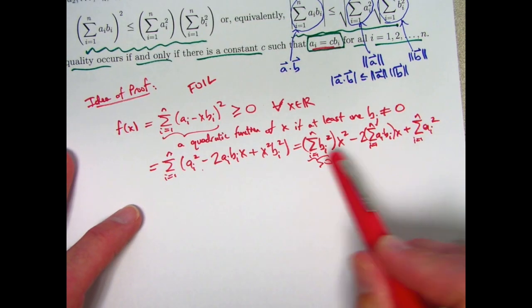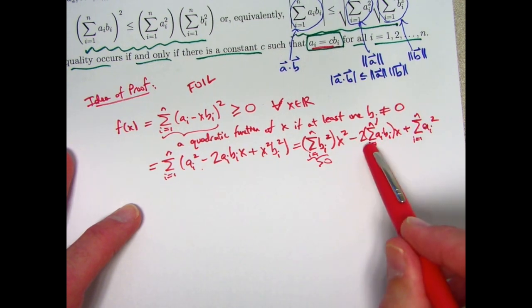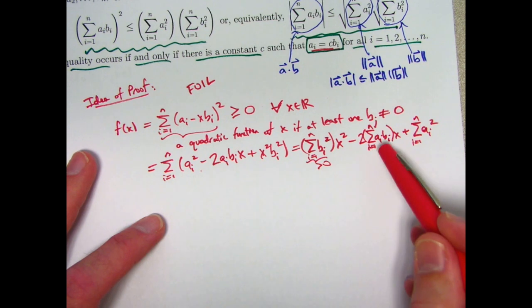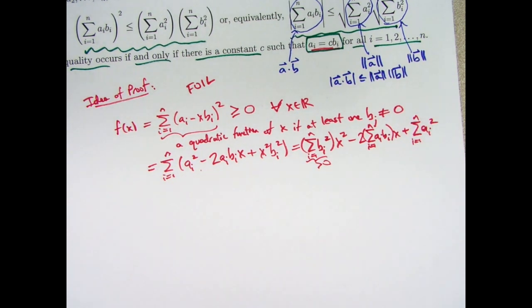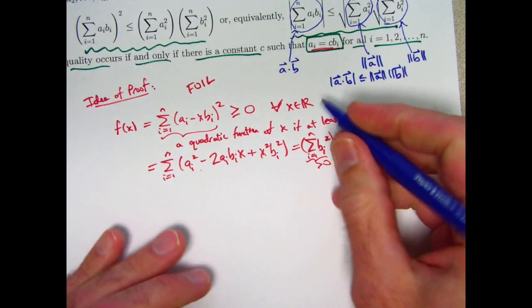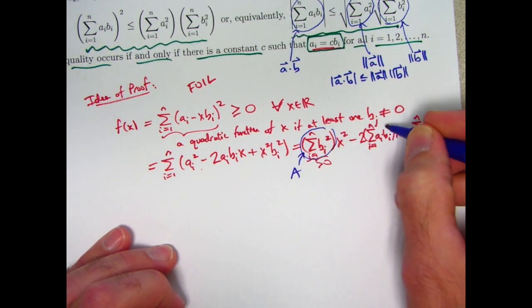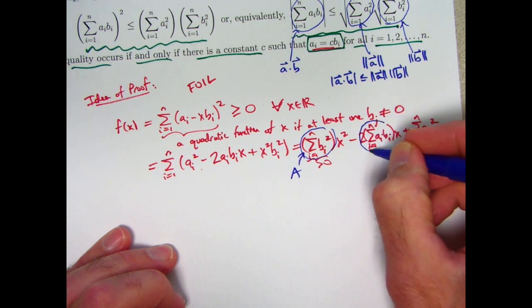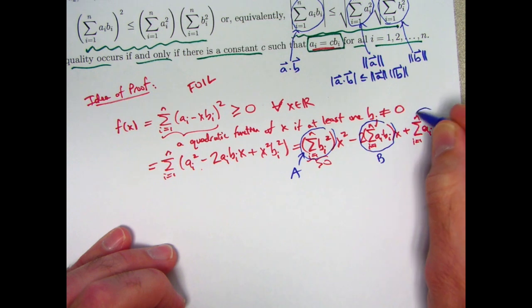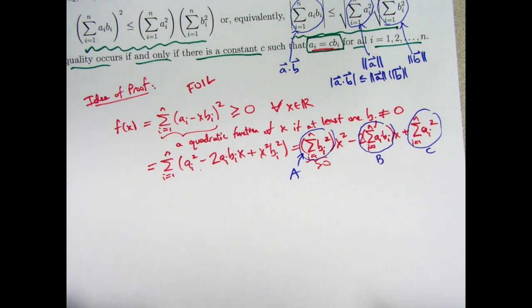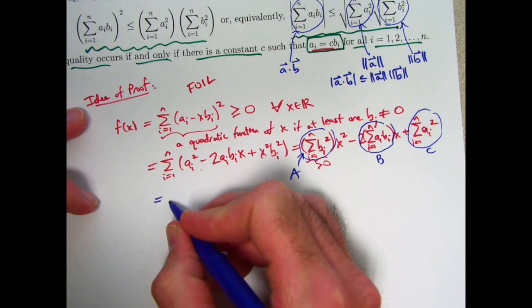And then the constant term is going to come from this one: plus summation i goes from 1 to n of aᵢ². So the coefficient of x² is this, which is positive. The coefficient of x is this, minus 2 times this, which could be a positive number. And then the constant term is this. Let me give these things names. Let's call this capital A. How about this one? Without let's do it without the minus sign included, let's call that capital B. And let's call this capital C. If I make those definitions, then f(x) can be written as Ax² minus Bx plus C, where again A is positive.